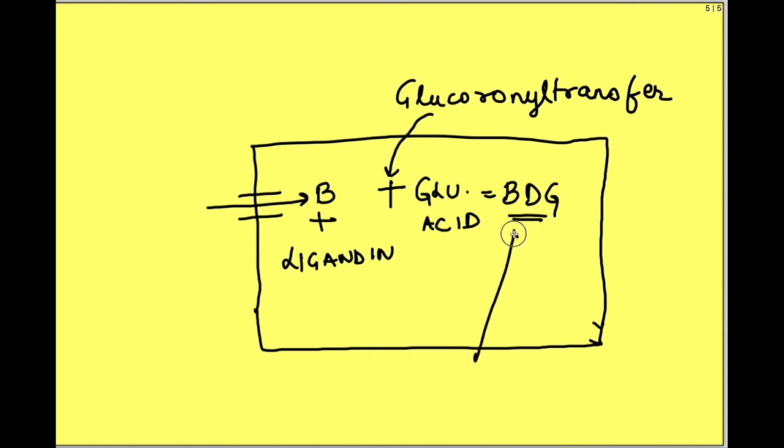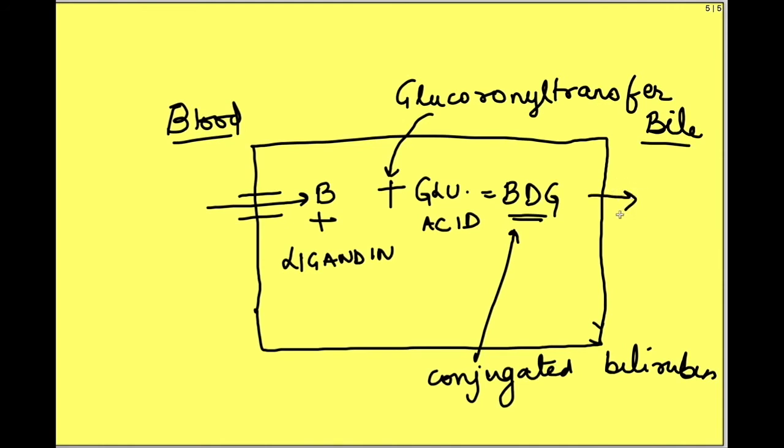This is also known as conjugated bilirubin because it has been conjugated to a substance. Finally, conjugated bilirubin is excreted into bile. This side is bile, here is blood. Bilirubin is excreted into bile by an active transport process requiring energy. For facilitated diffusion to continue, bilirubin should bind with glucuronic acid and be excreted, otherwise it will build up inside the hepatocytes.